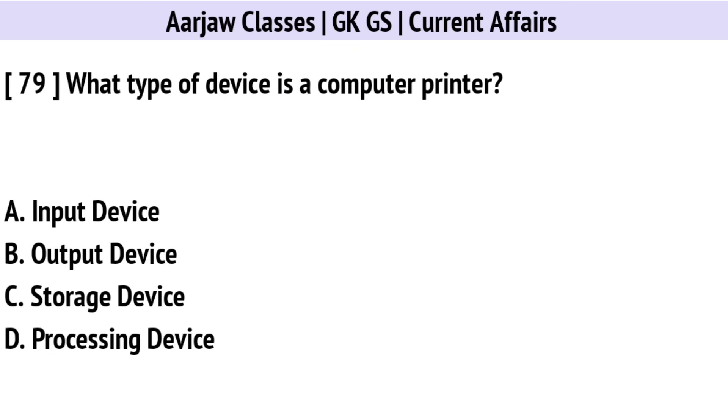What type of device is a computer printer? The correct option is B: Output Device.